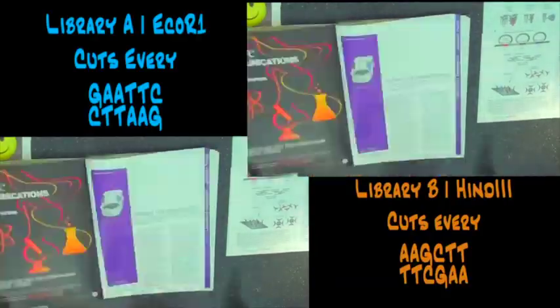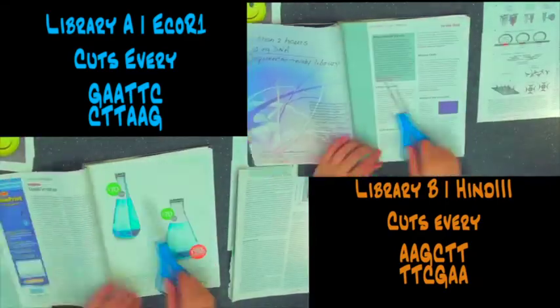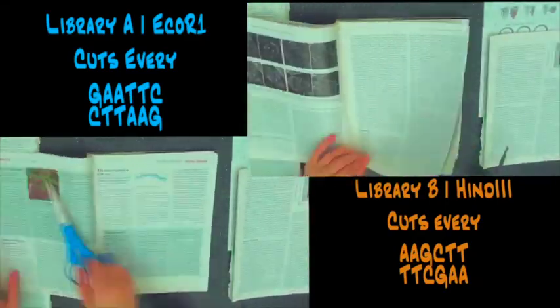These genomic libraries have the full fruit fly genome. The sole difference is that they are divided differently. The genomic libraries are similar to how two different editors may divide the same book into chapters differently.